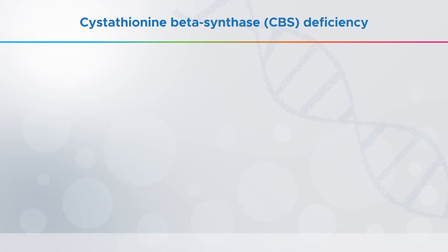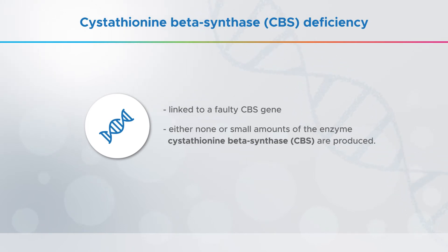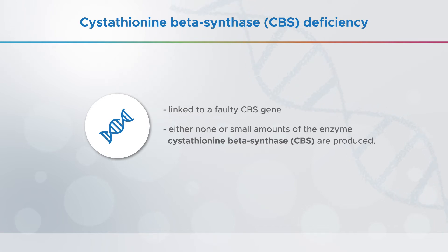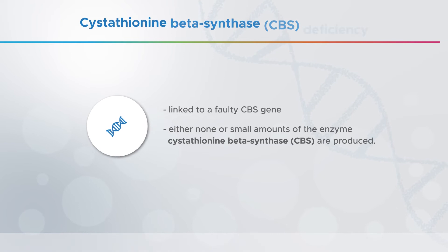This form of homocystinuria is caused by a fault or mutation in the CBS gene. The CBS gene holds the instructions needed to make the enzyme called cystathionine beta-synthase. If the gene is faulty, then either none or only small amounts of the CBS enzyme is produced, and the body is said to have a CBS deficiency.